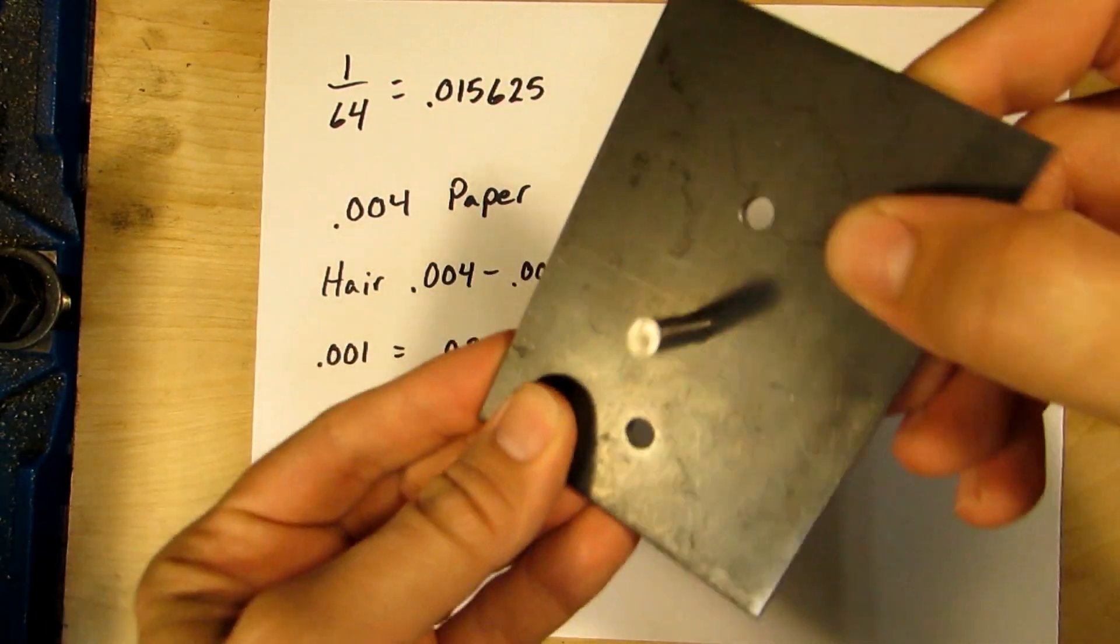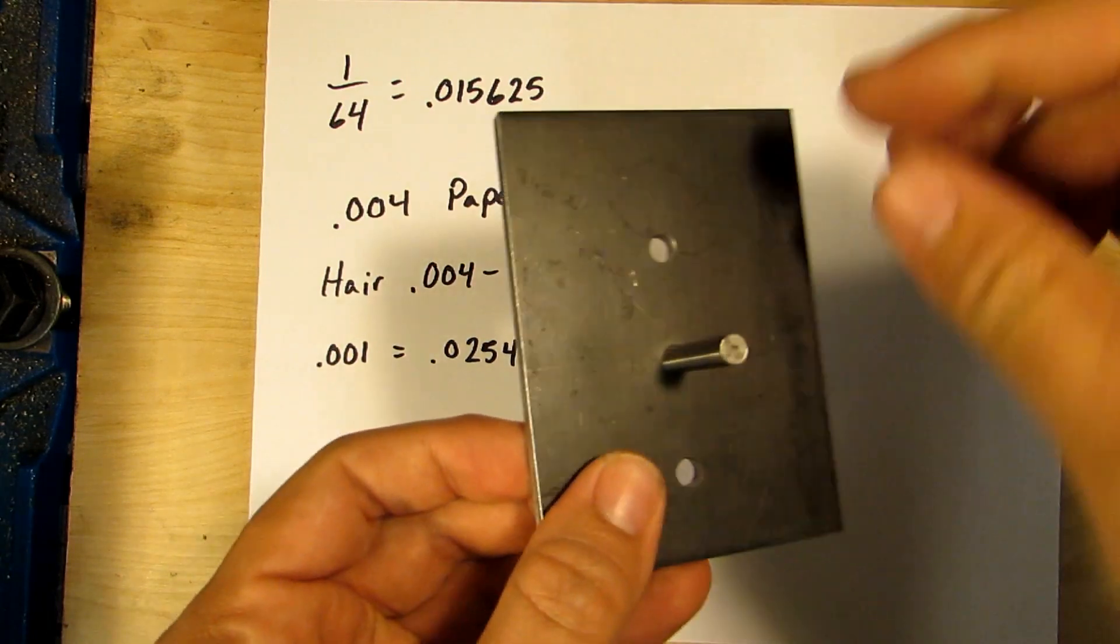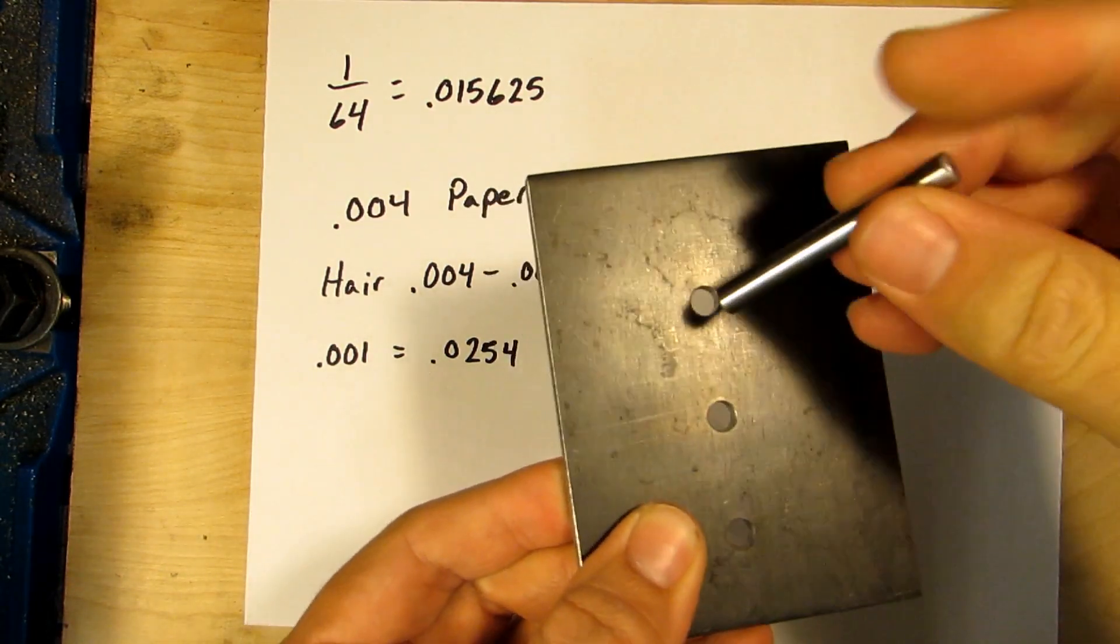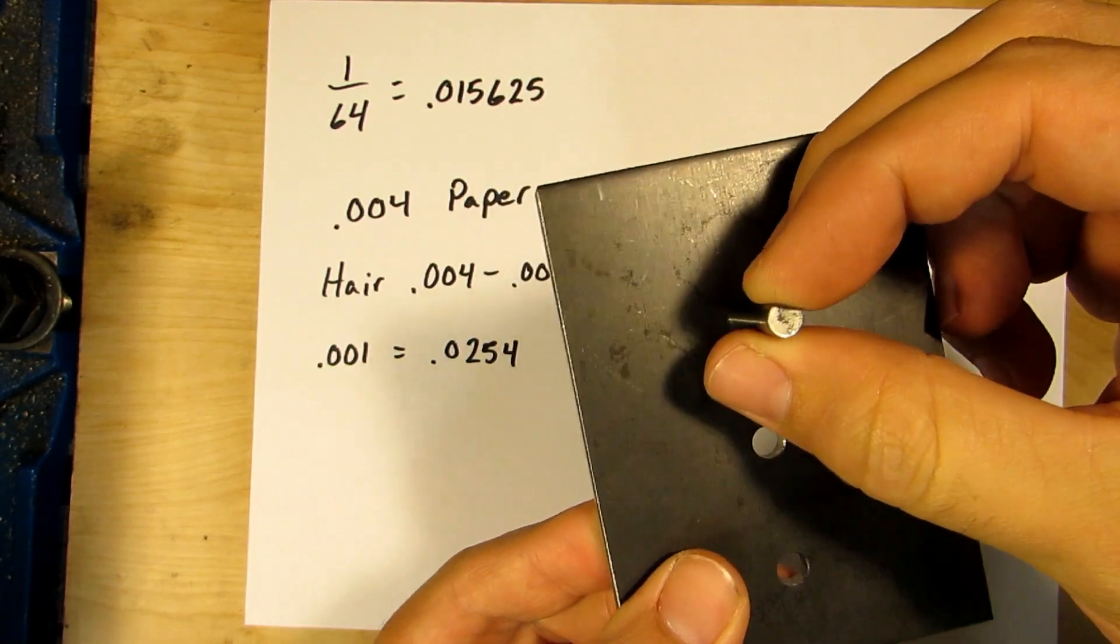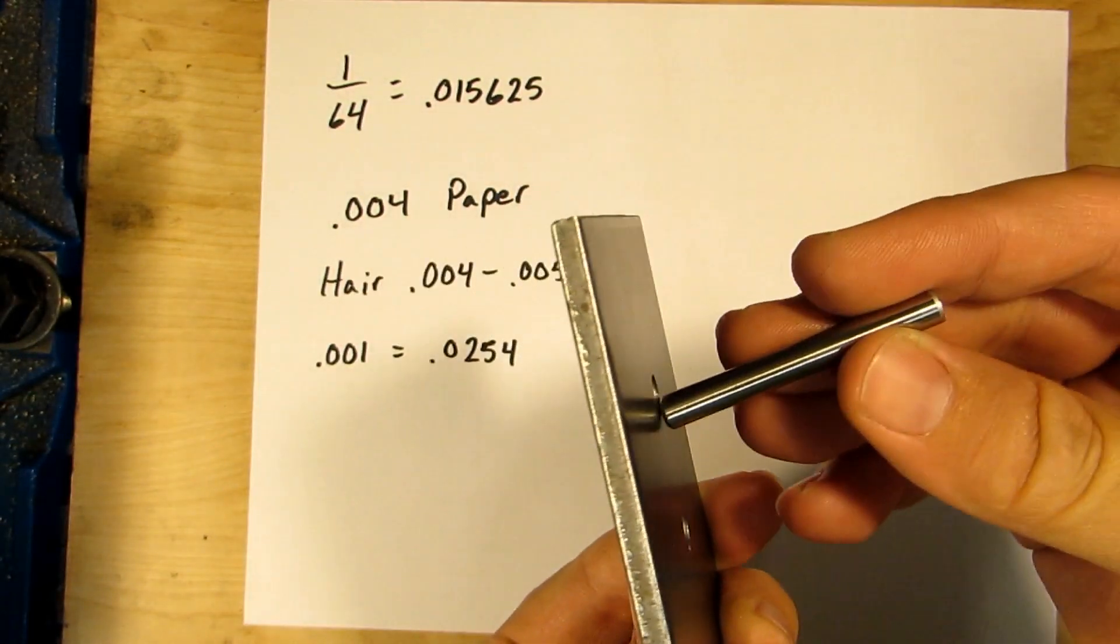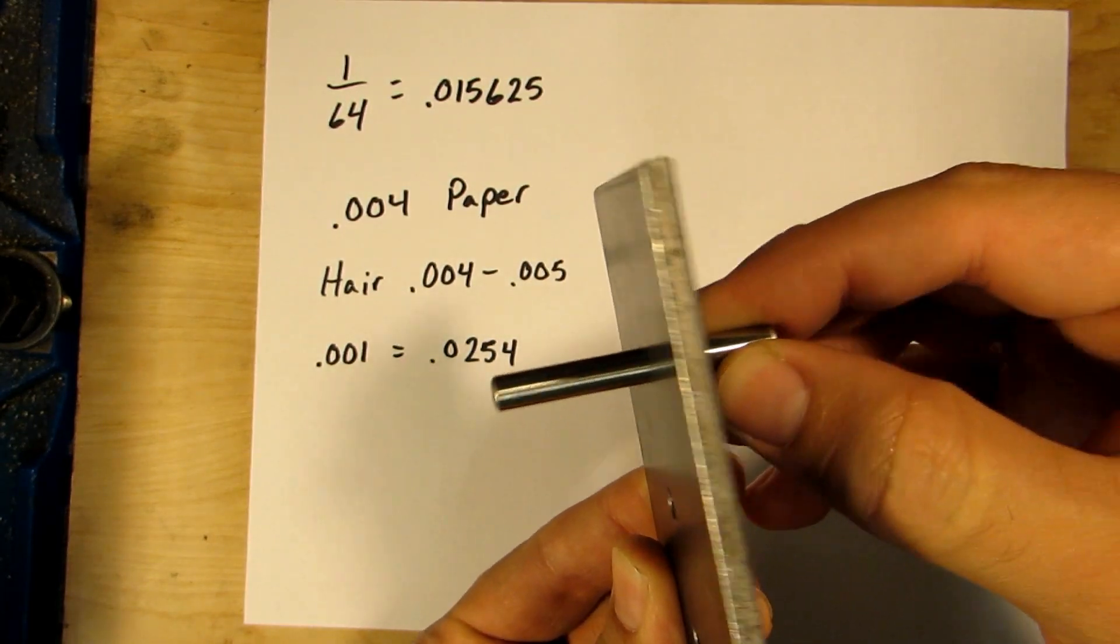I've got the 250 hole and it will actually go in there by hand and slide in, it's a little tough and you can see it doesn't want to fall out even if I shake it. And then just one thousandth of an inch bigger, the 251 hole, the pin actually just drops right out.